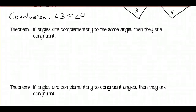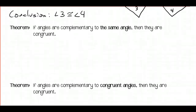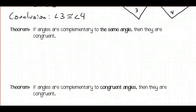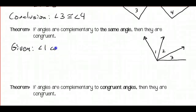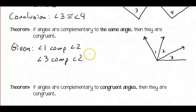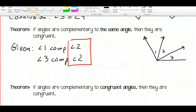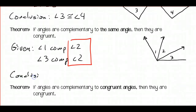The next two theorems are very similar, except now we're talking about complements. If angles are complementary to the same angle, then they are congruent. Let's look at a slightly different picture — you may recognize it. We have angles 1, 2, and 3. We may be given that angle 1 is complementary to angle 2 and angle 3 is complementary to angle 2. We notice they are complementary to the same angle, so our conclusion would be that angle 1 is congruent to angle 3.